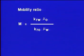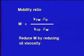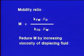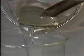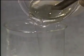Since we cannot easily alter the reservoir's permeability, we have only two choices for reducing M and thus improving recovery: we may reduce the viscosity of the oil or increase the viscosity of the displacing fluid. We can reduce the oil viscosity by heating it, or increase the viscosity of the displacing water by adding polymers to it. Polymers thicken it, as we see here.